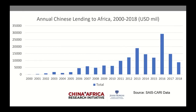Just to walk you through what we've got in our data: we've got lending from China to Africa from all the Chinese lenders - all sources of Chinese loans, including the Chinese government with its foreign aid loans, interest-free loans, contractor loans, and then the main Chinese banks, the China Development Bank and China Ex-Im Bank, starting in 2000 and going through 2018. You can see there's a lot of unevenness here.